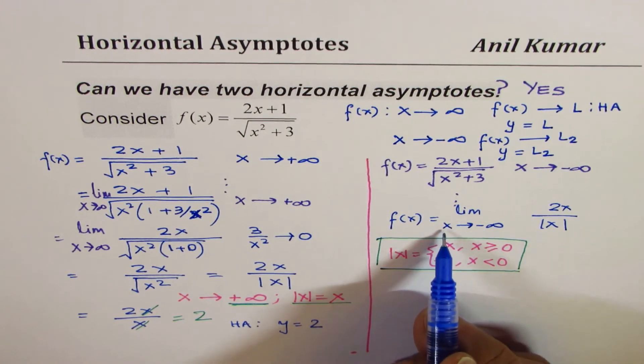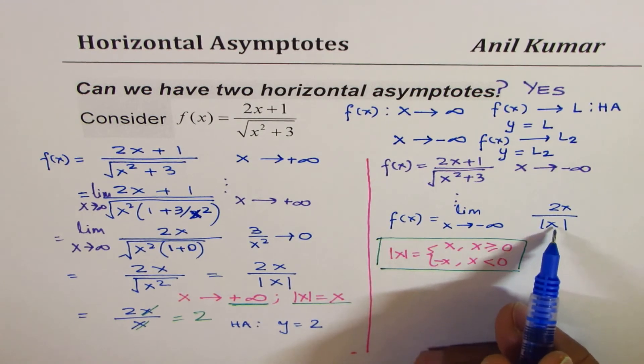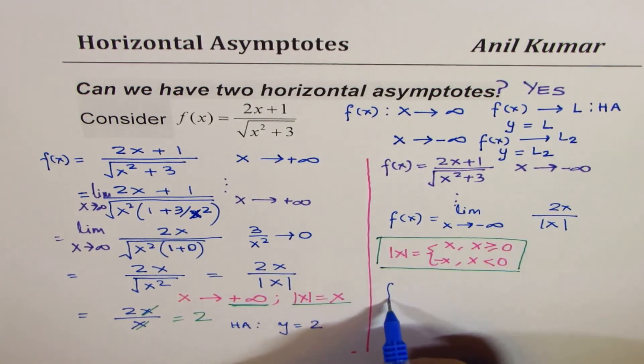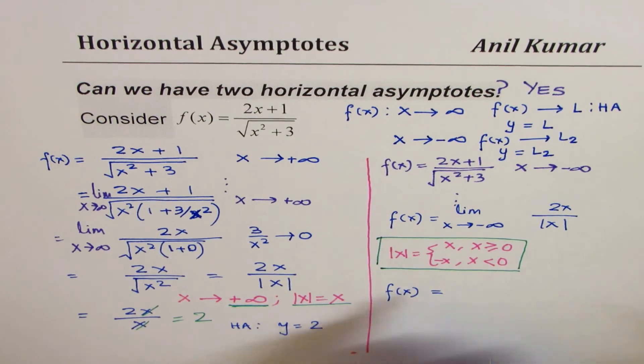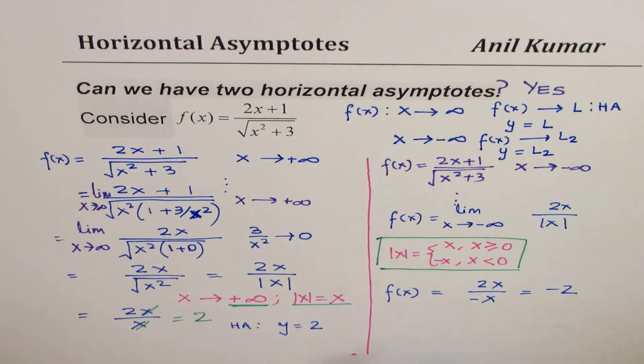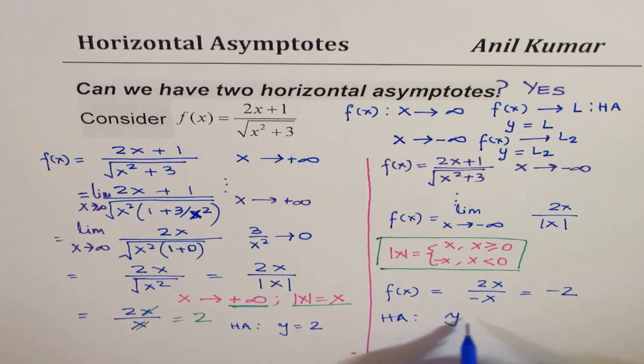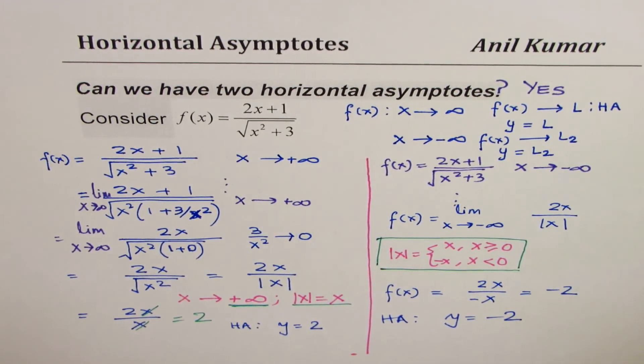However, in this particular case, since x is approaching negative infinity, which is a negative value less than 0, absolute value of x is negative x. Therefore f(x) is equal to 2x over minus x, which results in minus 2. So in this particular case, the horizontal asymptote equation will be y equals minus 2.